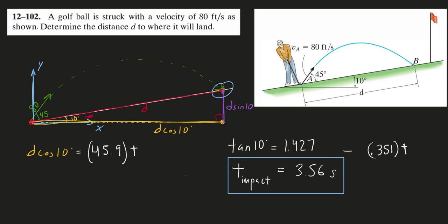Bringing back the x equation where x equals d·cos(10), I plug in the time of impact of 3.56 seconds to solve for the distance d. That gives d equal to 165.9 feet. To summarize: look at the impact site, identify the right triangle to find the x and y coordinates of impact, plug those into your position equations, combine and solve for time of impact, then substitute back to solve for the distance.